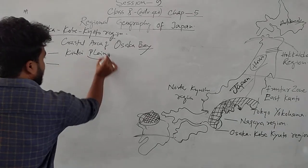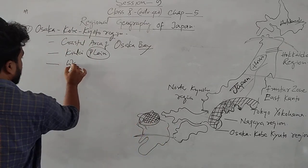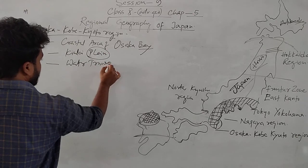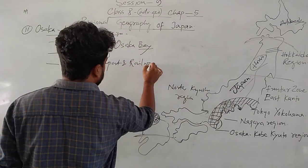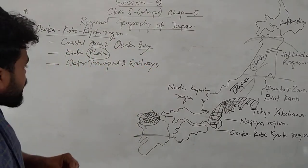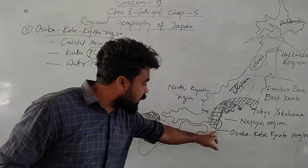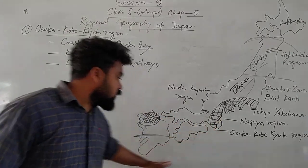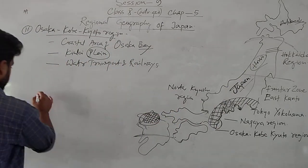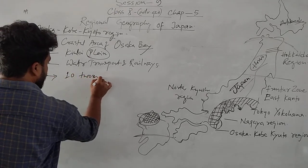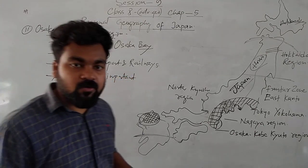Since the Osaka-Kyoto region is in the Kinki plain, it is developed in water transport and railway transport. Due to the availability of water transport and railways, industrialization has developed well here. Industries can bring raw materials from other countries directly through the ocean, importing and exporting commodities through the dockyard.